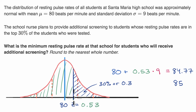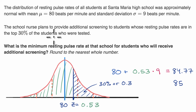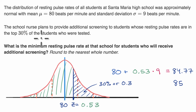So 85 beats per minute is the threshold. If you have that resting heartbeat, the school nurse is going to give you additional screening — you are in the top 30% of students who were tested.